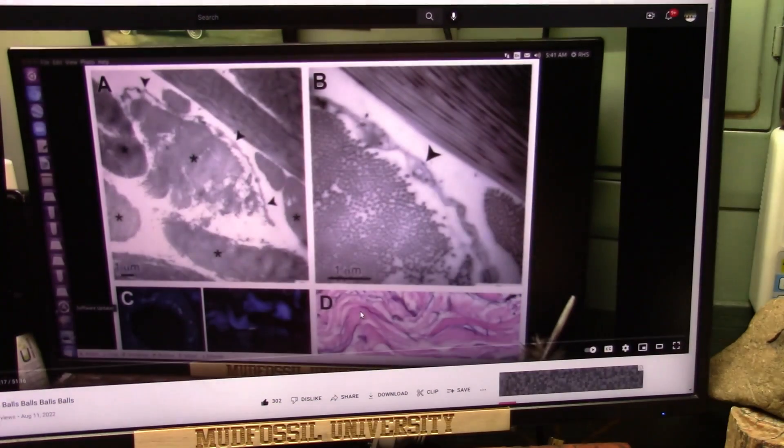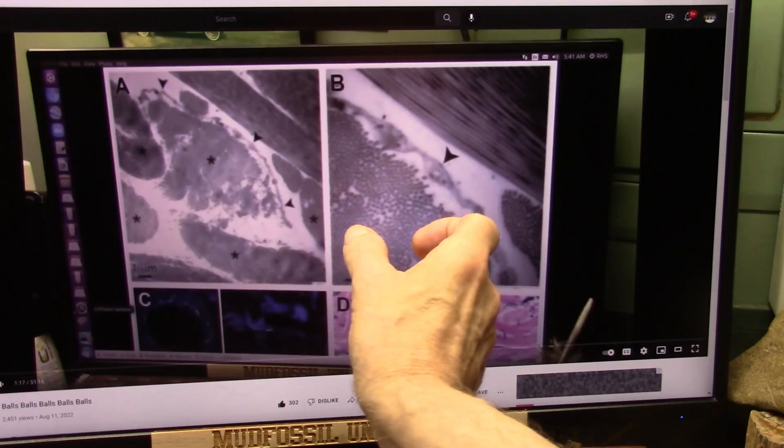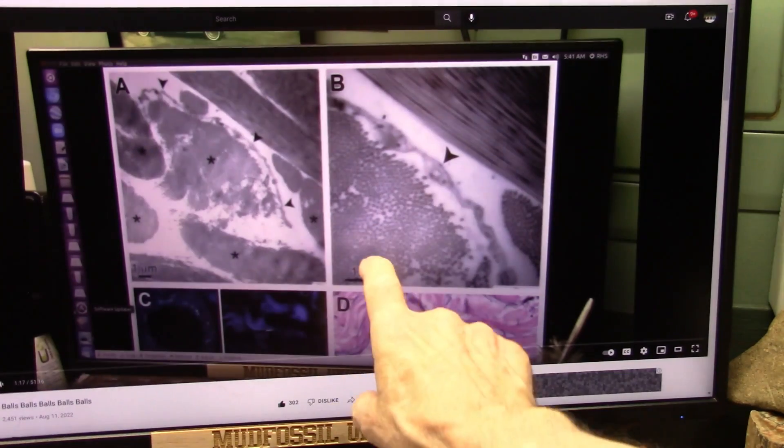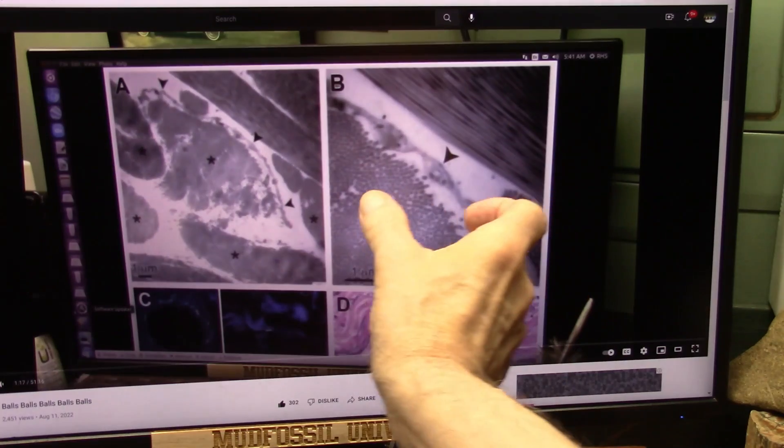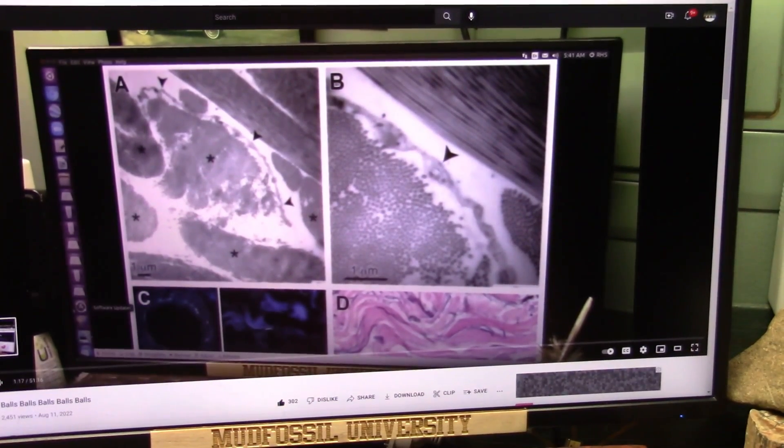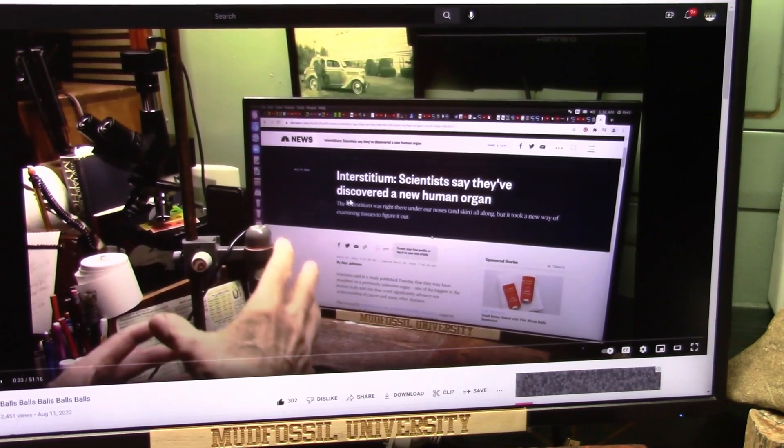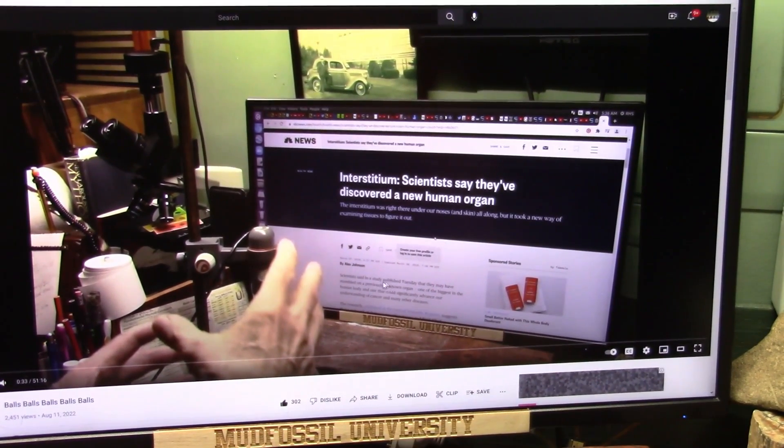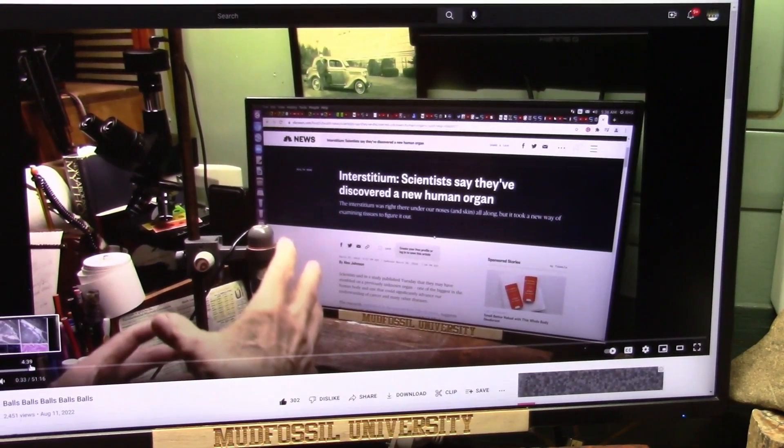This is one micrometer, one micrometer long. It would take 300,000 of these balls in a row to make one inch. 300,000. Now, don't forget, this is a new organ system. This is all brand new. Interstitium scientists say they've discovered a new human organ. This is 2018, CBS News. This is no joke. This is my shop here. And here's what it looks like. It's going to blow your mind.